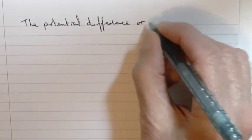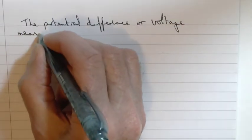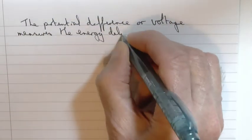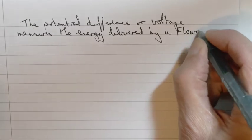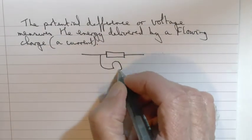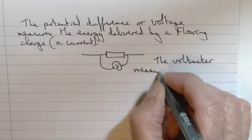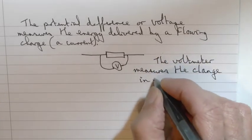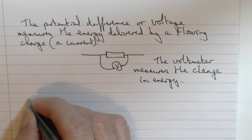So let's be a bit more precise about what voltage, or more correctly, potential difference means. When the voltmeter is connected around a bulb or a resistor, it's measuring the energy delivered by the flowing charge, that is a current. It measures the change of energy as the charge flows through.